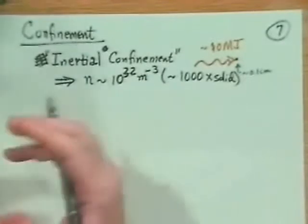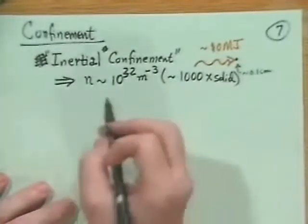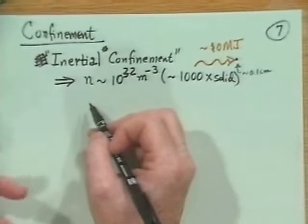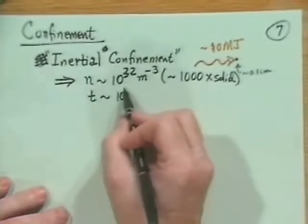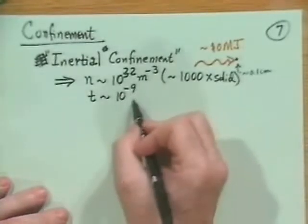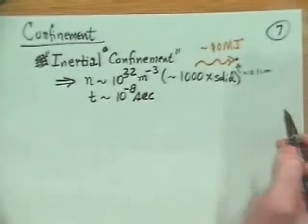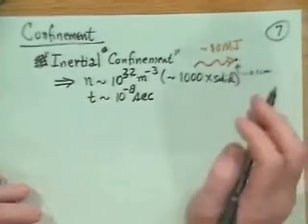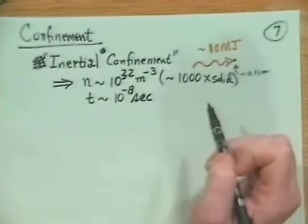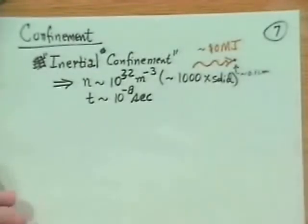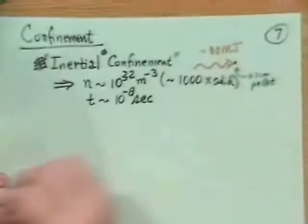You compress it 1,000 times, like a deuterium liquid compressed 1,000 times. Then since our particles were moving 10 to the 6 meters a second, the interaction is over with in about 10 nanoseconds, 10 to the minus 8 seconds. You apply this laser, compress it, and heat up the medium to this 10 kilovolts. Then shortly thereafter you get this DT explosion.